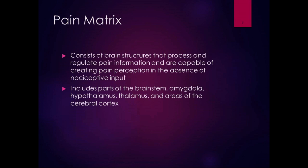The pain matrix is a way of describing the systems in the body that control pain. It consists of brain structures that process and regulate pain information. These brain structures are capable of creating pain perception in the absence of nociceptive input. The pain matrix includes parts of the brainstem, the amygdala — which is part of the emotional system — the hypothalamus, the thalamus, and areas of the cerebral cortex. These systems decide whether you're going to experience pain. If you have pain matrix dysfunction, that can be one of the causes of chronic pain.